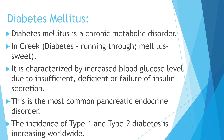The first disease of such type is Diabetes mellitus. Diabetes mellitus is a chronic metabolic disorder. In Greek, diabetes means 'running through' and mellitus means 'sweet.' It is characterized by an increase in the blood sugar or glucose level, caused due to insufficient or failure of insulin secretion by the pancreas. Insulin is secreted by the endocrine gland called the pancreas.